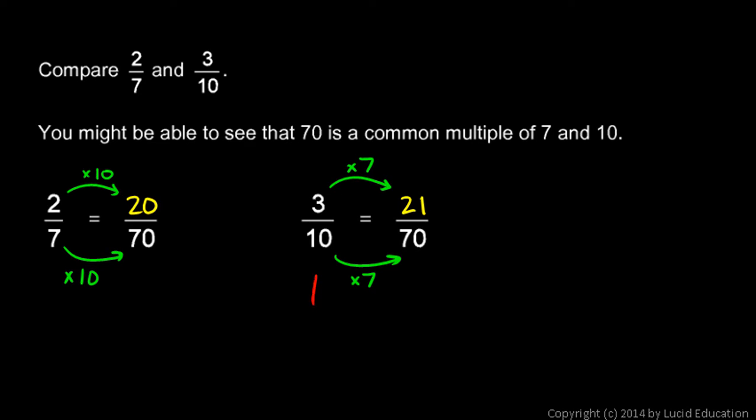So 3-tenths is equivalent to 21-seventieths. And 21-seventieths is clearly greater than 20-seventieths. So that means the 3-tenths, which is equal to this, is clearly greater than the 2-sevenths, which is equal to that.